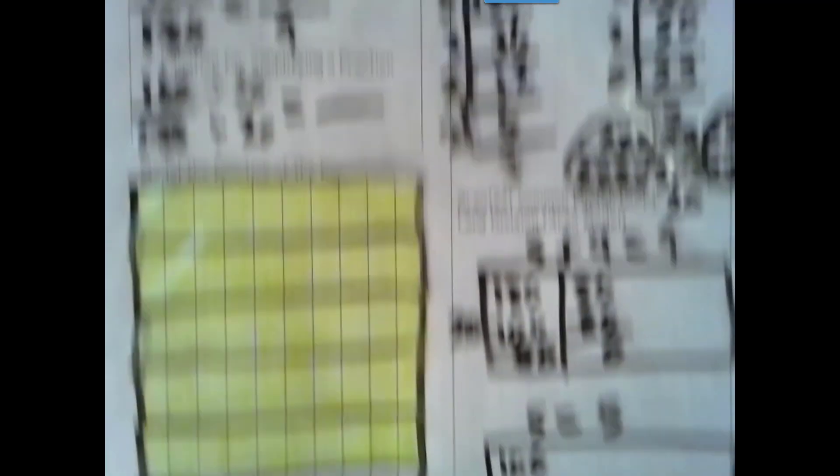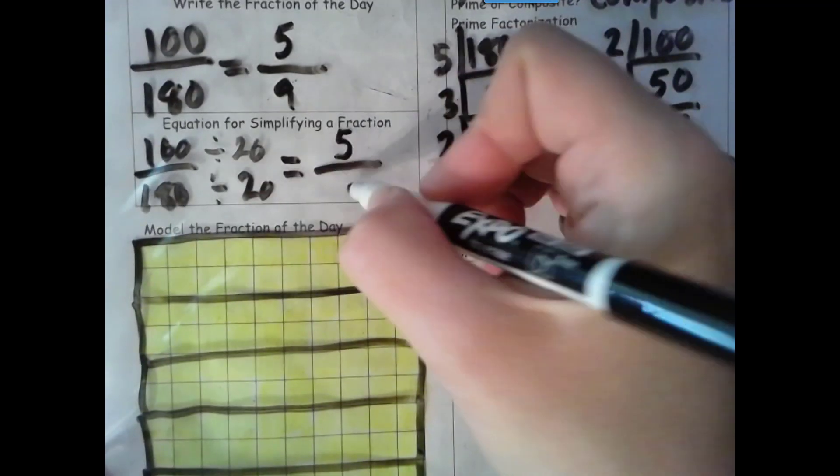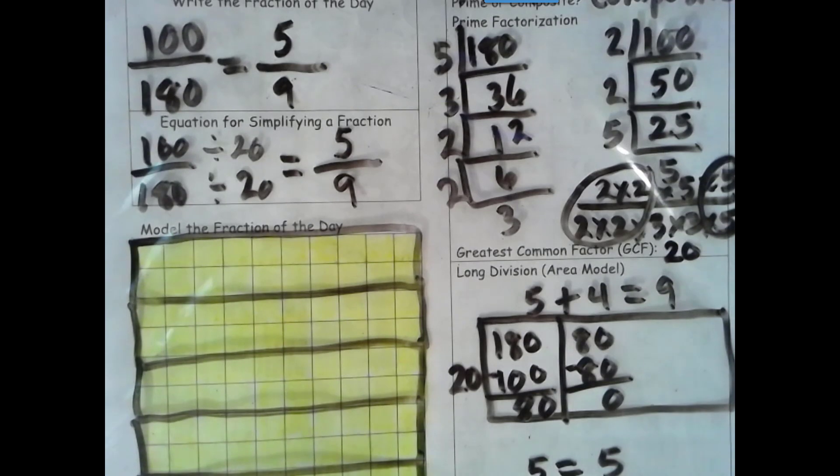So our numerator is definitely 5 and our denominator is definitely 9. We have 5 ninths of the school year left. That's 5 groups of 20 days or 100 days completed, with 80 days remaining.